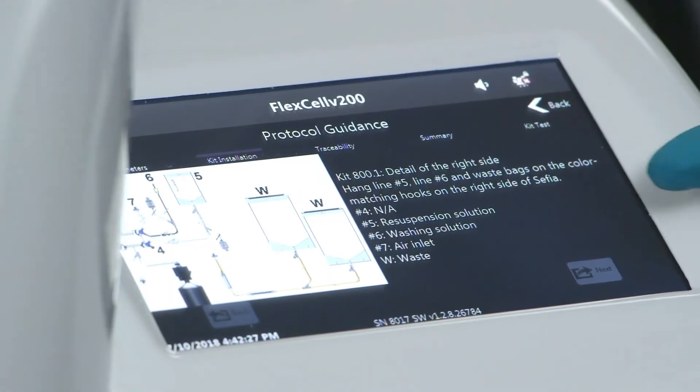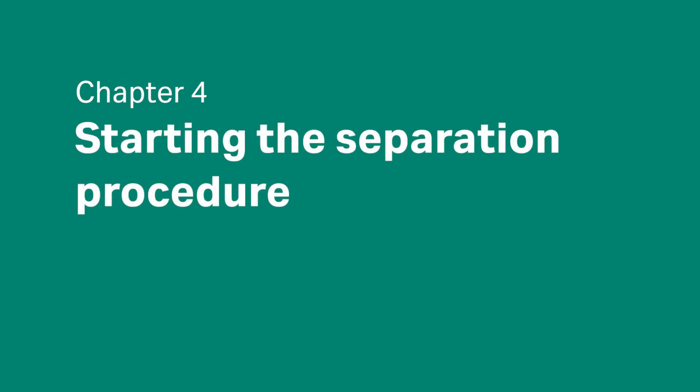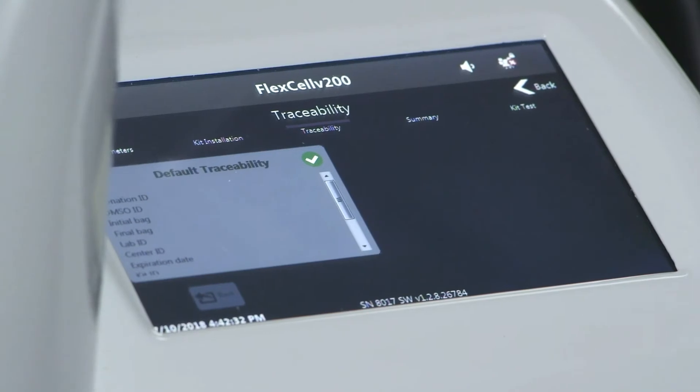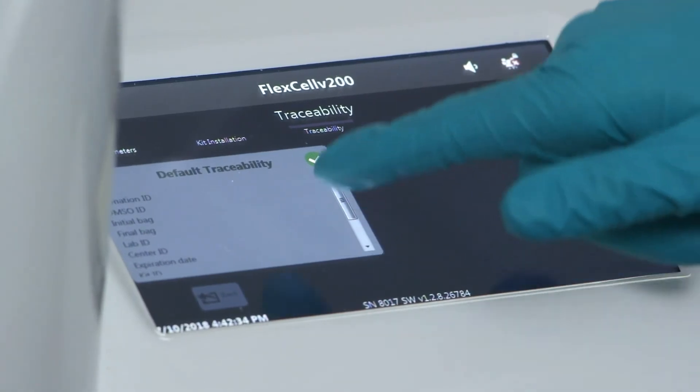Then select Next on the instrument screen. Once kit installation is completed, review the traceability configuration.